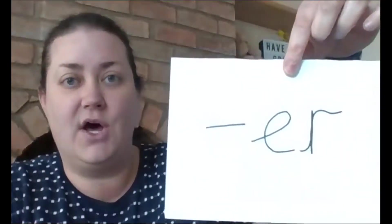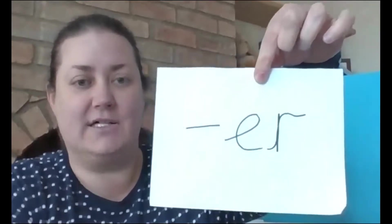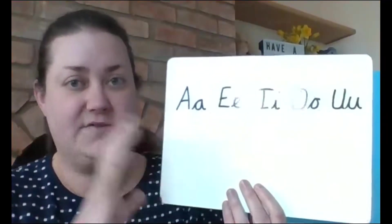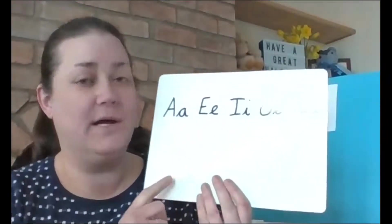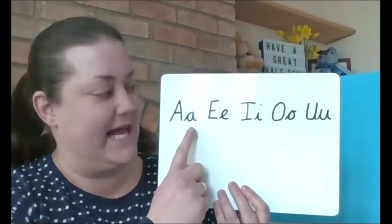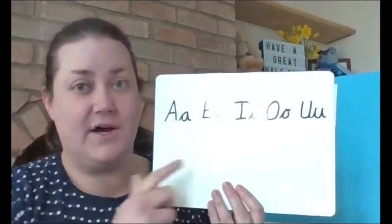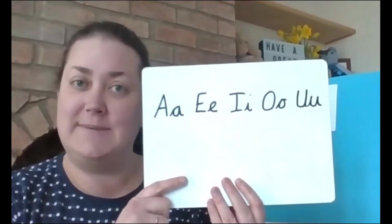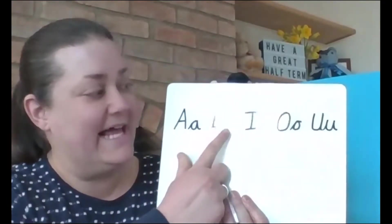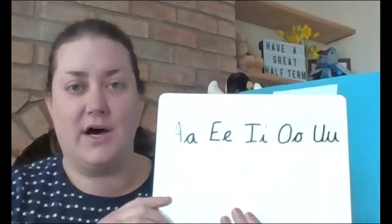And the other suffix that we're going to think about in today's session is the suffix er. When we add er to the end of a word, that's the suffix er. The rule for adding er to a word that has got the short vowel followed by a consonant is exactly the same as adding ing. So let's just go back to our vowels. There's five vowels: a, e, i, o and u. But they can make a short vowel sound as well, like a, e, i, o and u. And it's those short vowels that we need to be thinking about today, remembering those in our heads.